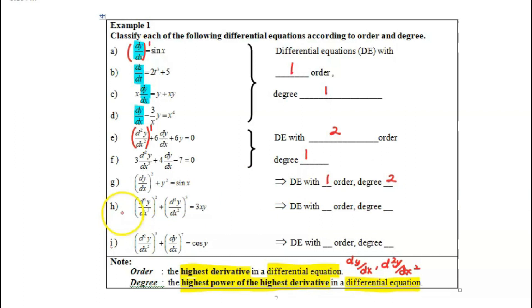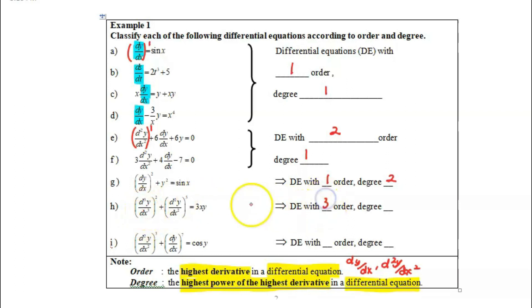For equation H, we have the highest derivative d³y over dx³, so the order is 3. And the highest derivative has power 2, so the degree is 2.